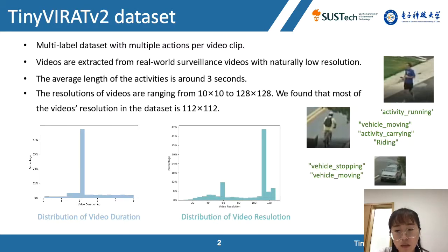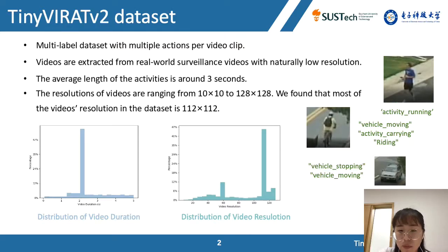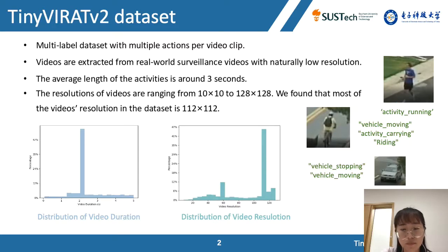The resolution of videos ranges from 10 to 128, though we found that most videos in the dataset have resolution 112×112. The videos are very blurry and usually have multiple labels per clip. By analyzing the data, we identified two main difficulties: first, low resolution causing loss of detail when zoomed in; and second, multiple labels, which require a more efficient model to classify them.